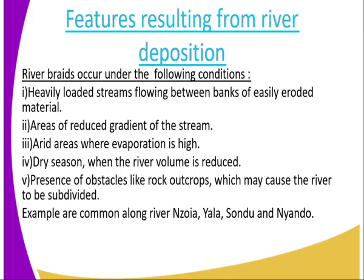Areas of reduced gradient of the stream, so it must lose that energy of carrying the load, and the next thing is deposition. The other one, arid areas where evaporation is high, meaning that the volume of the water will be reduced, hence deposition takes place. Fourth, dry season when the river volume is reduced. Number five, presence of obstacles like rock outcrops, which may cause the river to subdivide. So those are the conditions that are necessary for river braids to occur.